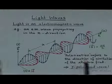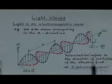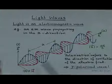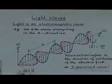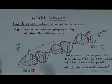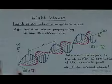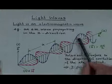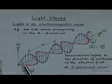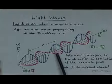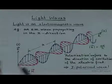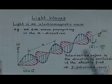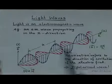Polarization refers to the direction of oscillation of the electric field. In this diagram, if we look at only the electric field variation, we can see it varies in the y direction only — confined to the x-y plane. Therefore, this is a y-polarized wave.